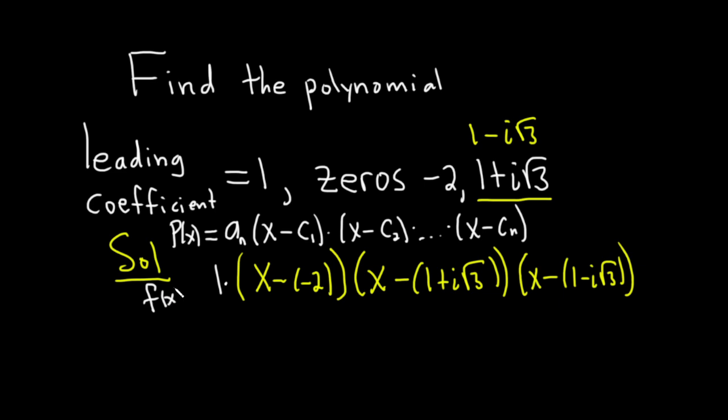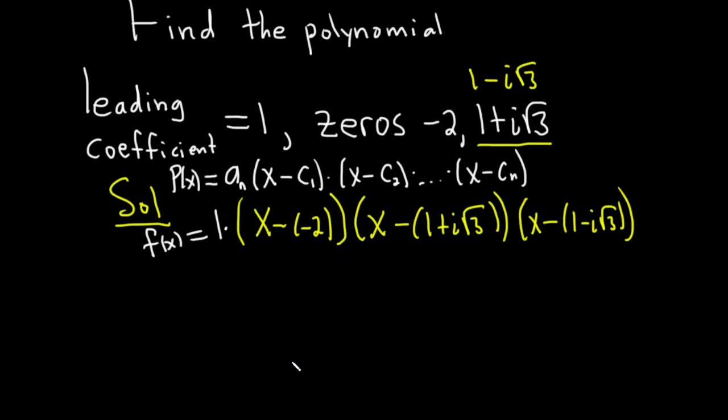And so f of x is equal to this. Now we could leave it like this. However, the directions do say they want only real coefficients. They don't want to see any complex numbers in the solution. So we're going to have to take some steps to clear those. So we have f of x equals, let's go ahead and write this as x plus 2.